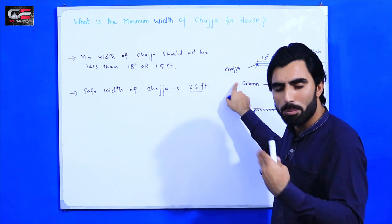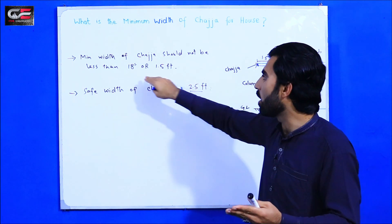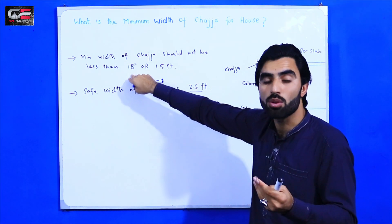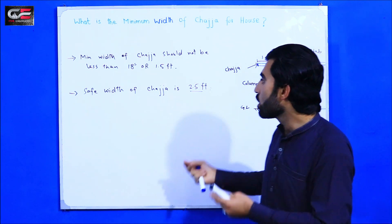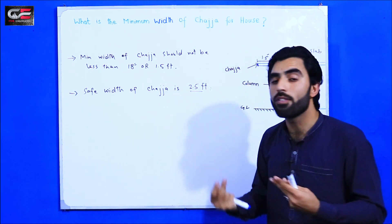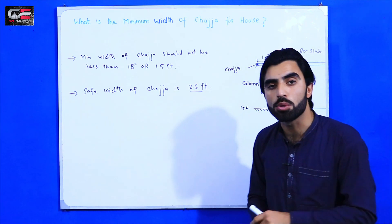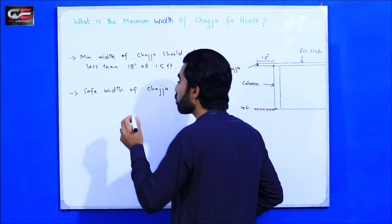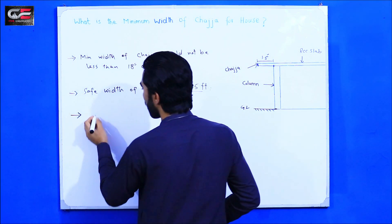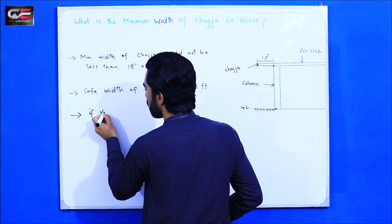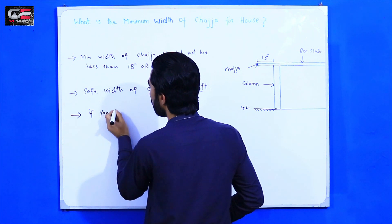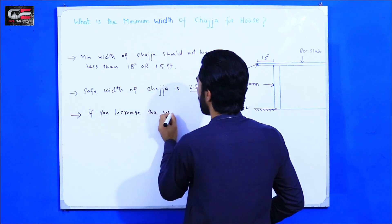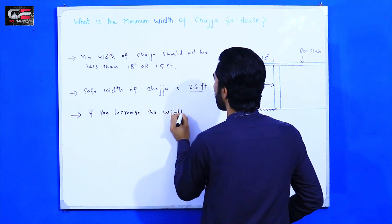The building should not be affected because of the chadja, so it should be minimum 18 inches. The safe width of chadja is 2.5 feet and you don't need to do a special design for this. But if you want to increase the width of chadja beyond that, there are specific rules to follow.